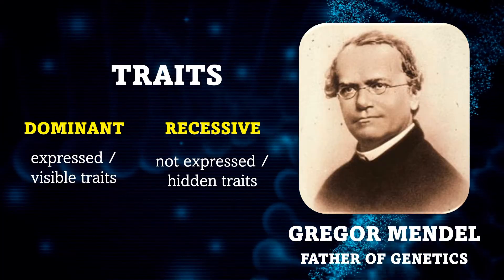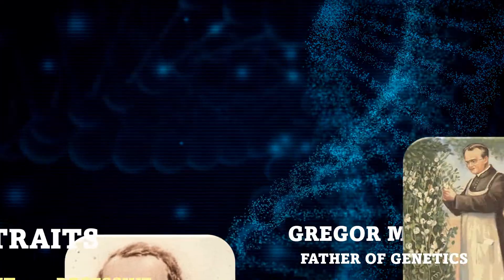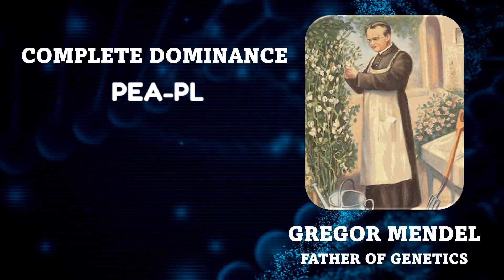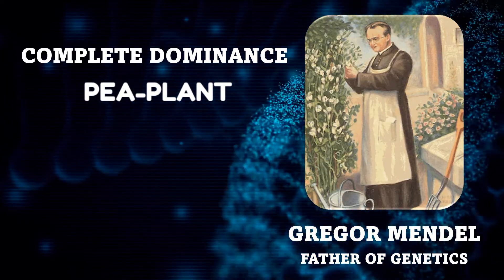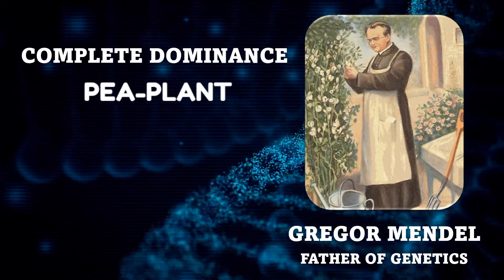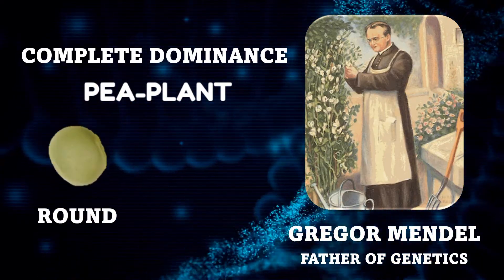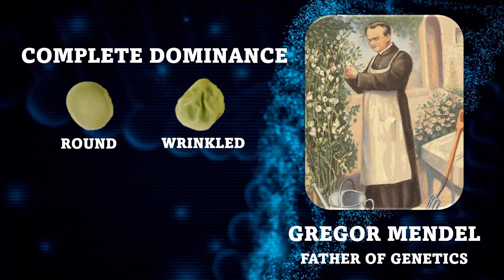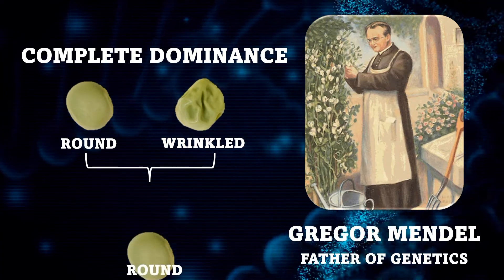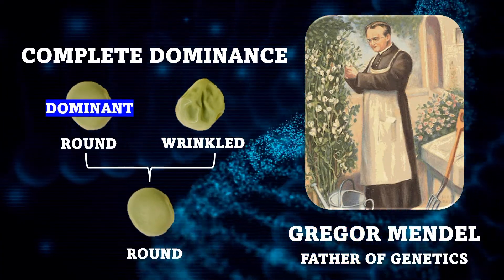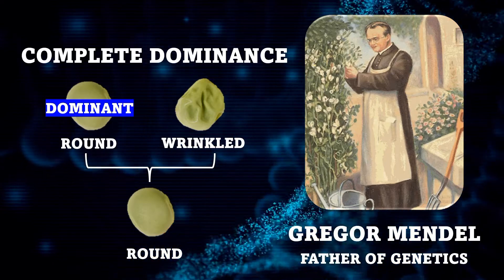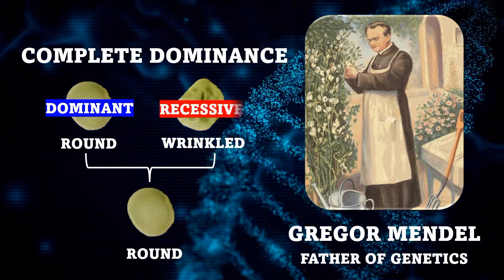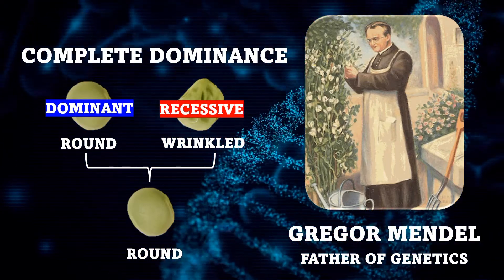Mendel's experiments show complete dominance after crossing the pea plant traits. For example, when he crossed round and wrinkled peas, the result was round peas, which indicates that round is a dominant allele. Thus, the dominant allele was expressed over the recessive allele, which is the wrinkled pea.